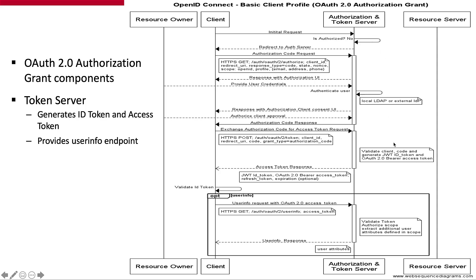The authorization and token server will then validate the authorization code and, in addition to the access token and refresh token, generate a JWT ID token to be returned to the client, which can then be used on subsequent calls to the user info endpoint to return claims approved for the particular end user.